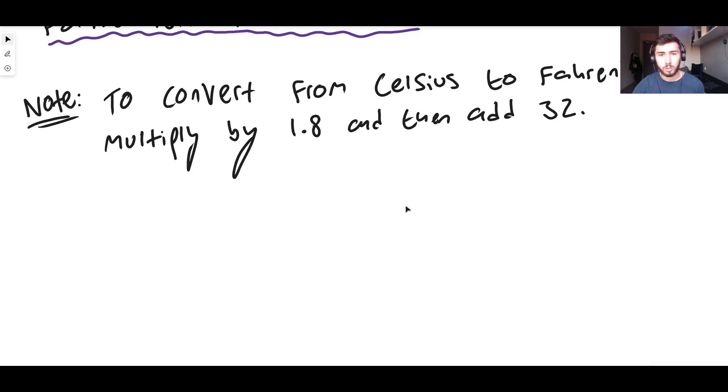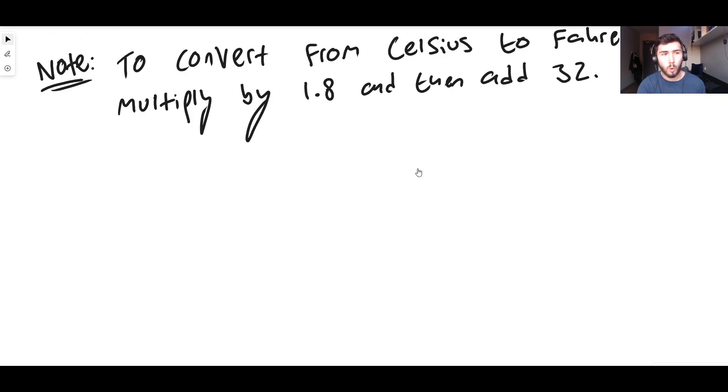For example, if it was 10 degrees Celsius, what would it be in Fahrenheit? Well, you would do your 10 multiplied by 1.8, and then whatever that is you would add 32 to it. So 10 times 1.8 is 18, and then you'd add 32, and that would give you 50.